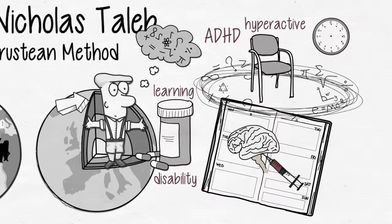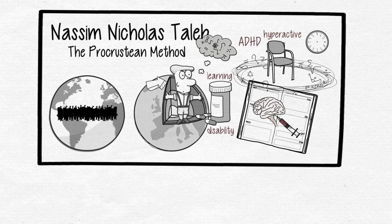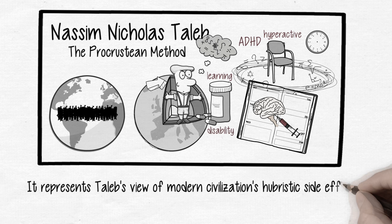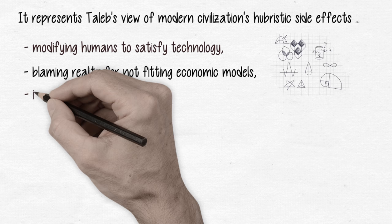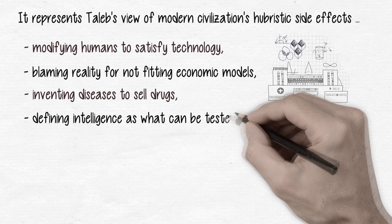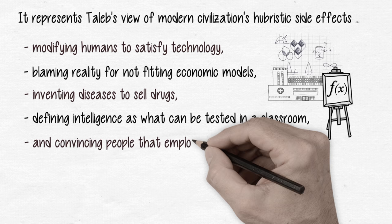Situations like this are everywhere around us and they often bear grave consequences. As it reads on the back cover, it represents Taleb's view of modern civilization's hubristic side effects: modifying humans to satisfy technology, blaming reality for not fitting economic models, inventing diseases to sell drugs, defining intelligence as what can be tested in a classroom, and convincing people that employment is not slavery.